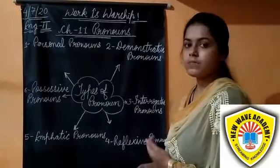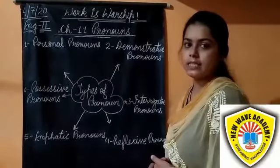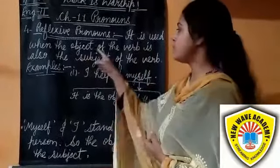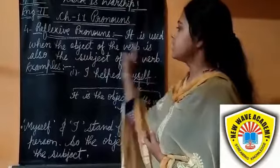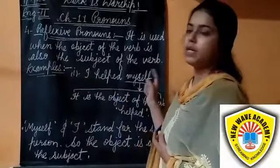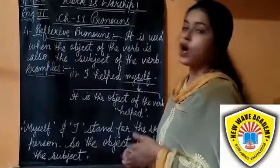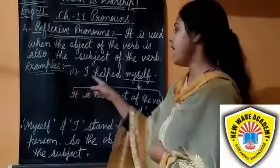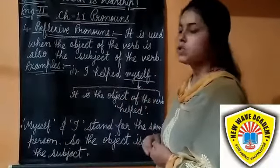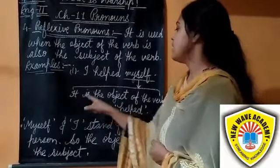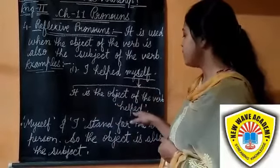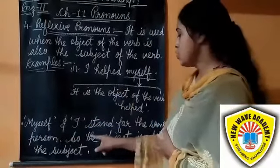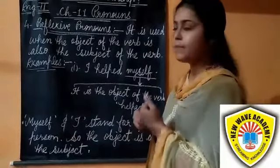Let's start from reflexive pronoun in detail. Reflexive pronoun is used when the object of the verb is also the subject of the verb. For example, 'I help myself.' Here, 'myself' is the object of the verb 'help,' and myself and I stand for the same person, so the object is also the subject.